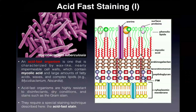All of this combined makes the organism very resistant to a lot of conditions such as disinfectants, dry conditions, and also resistant to stains such as the gram stain. The gram stain is arguably one of the most important staining procedures because it's really the first step in identifying any species of bacteria, but if you have an acid fast organism, the gram stain does not penetrate the cell wall because of these lipids such as mycolic acid, and so gram stains are ineffective at identifying acid fast organisms. Because of that, they require this special staining technique called the acid fast stain.